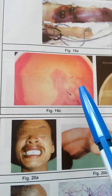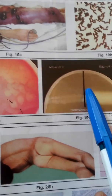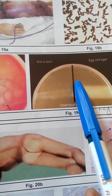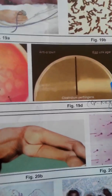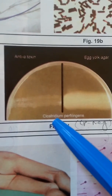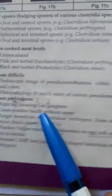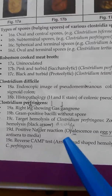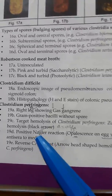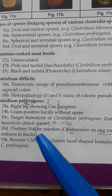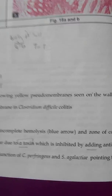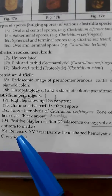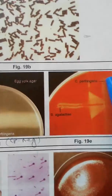19d shows the positive Nagler reaction — an important one-liner for PG exams. The Nagler reaction is seen in Clostridium perfringens. It is opalescence on egg yolk agar due to alpha toxin, which is inhibited by adding anti-alpha toxin antiserum to the media. You can see 'anti-alpha toxin' written on the egg yolk agar plate.